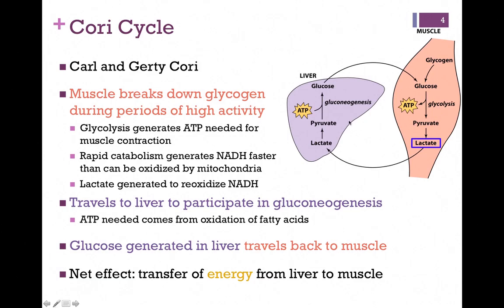Notice the difference between the two pathways. The muscle uses glucose to generate lactate. The liver starts with lactate to make glucose. The difference is in the disposition of the energy, or ATP. So the net effect is a transfer of energy from the liver to the muscle — the muscle gains the energy, and the liver provides it via the glucose.